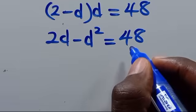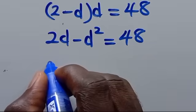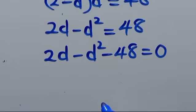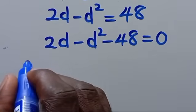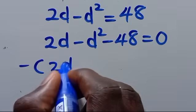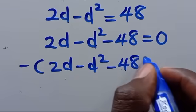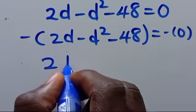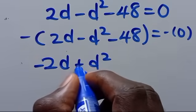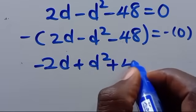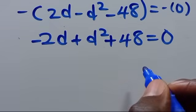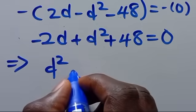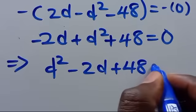Taking 48 to the other side gives 2d minus d squared minus 48 equals 0. To eliminate the negative leading term, multiply through by minus 1. Rearranging into quadratic format: d squared minus 2d plus 48 equals 0.